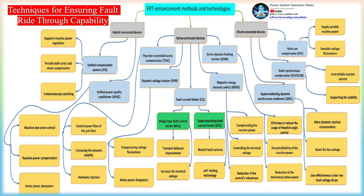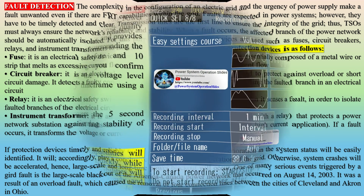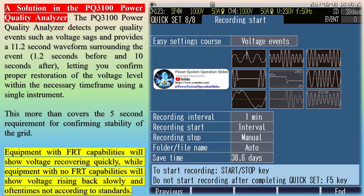The function of these protection devices is as follows. A fuse is an electrical safety device that provides overcurrent protection — it is composed of a metal wire or strip that melts as excessive current flows through it, thereby interrupting the current flow. A circuit breaker is an electrical safety switch that automatically operates to protect against overload or short-circuit damage; it detects a faulty condition and interrupts current flow by isolating the faulted branch. A relay is an electrical safety switch that commands a circuit breaker to trip when it senses a fault, in order to isolate faulted branches. An instrument transformer is an electrical measuring device mainly coupled with a relay that protects a power network substation against faults at high-voltage or high-current applications.